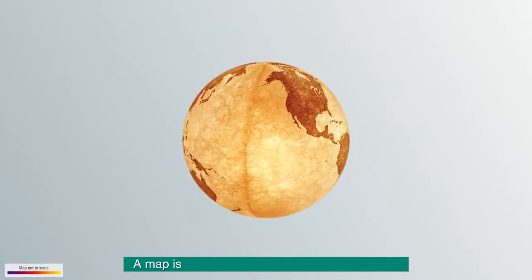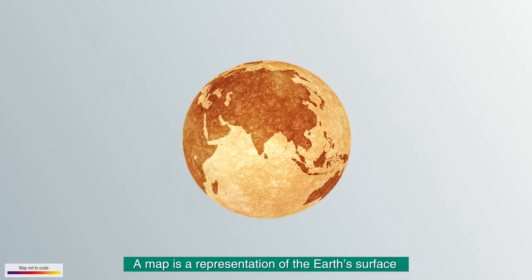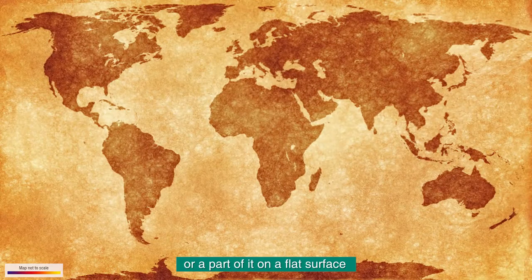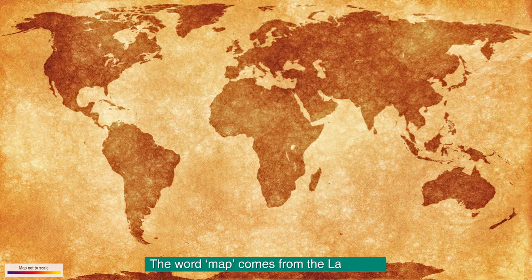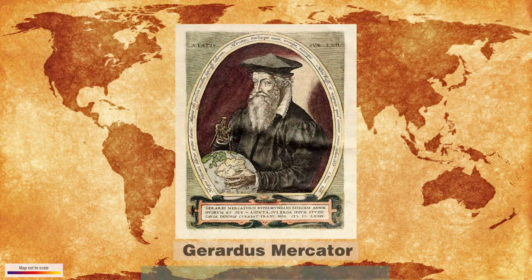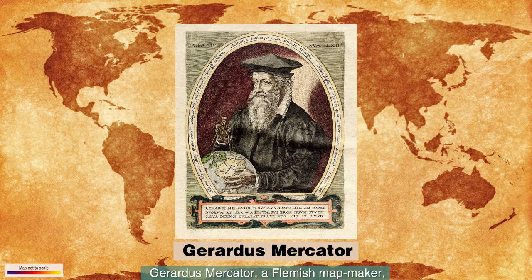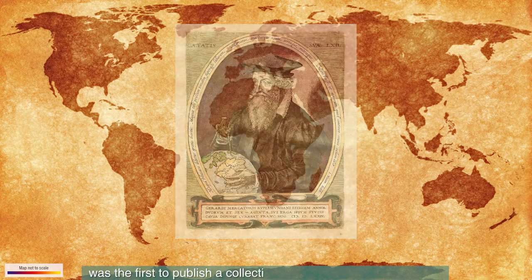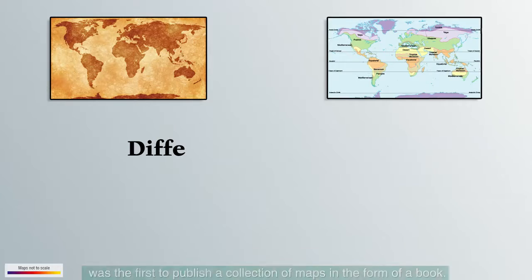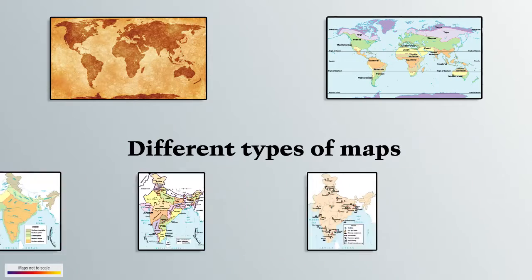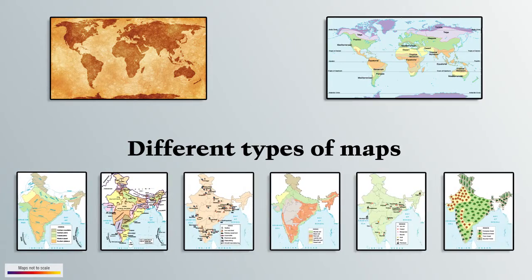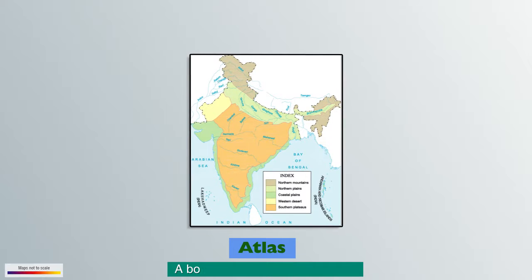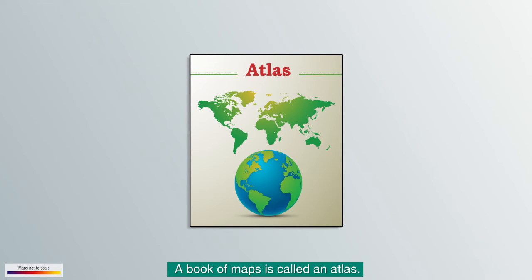A map is a representation of the Earth's surface or a part of it on a flat surface. The word map comes from the Latin word Mapo, which means a napkin. Gerardus Mercator, a Flemish map maker, was the first to publish a collection of maps in the form of a book. A book of maps is called an Atlas.